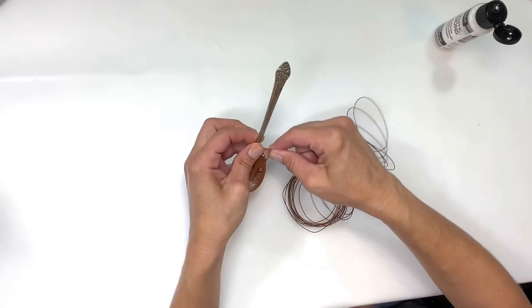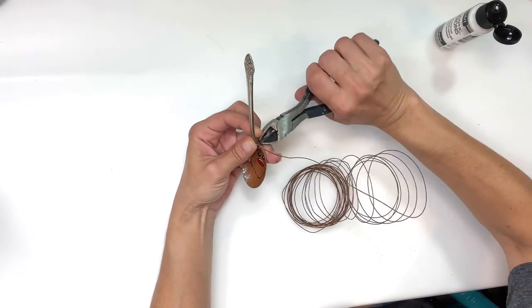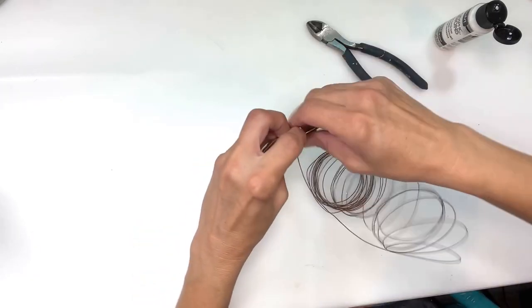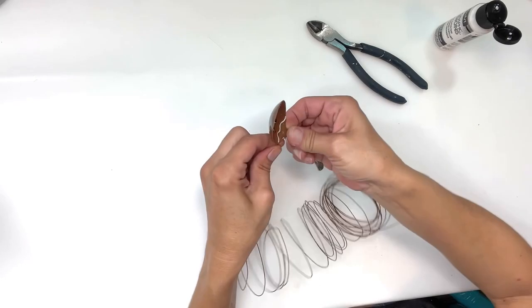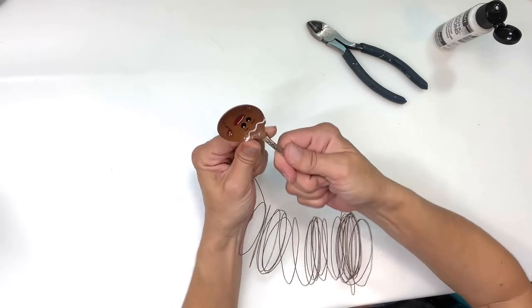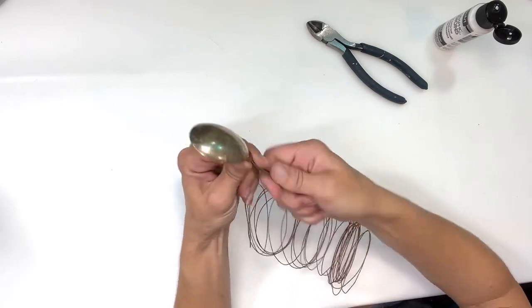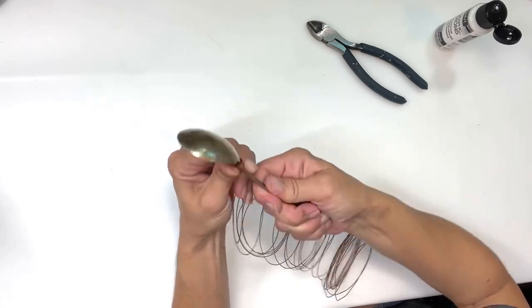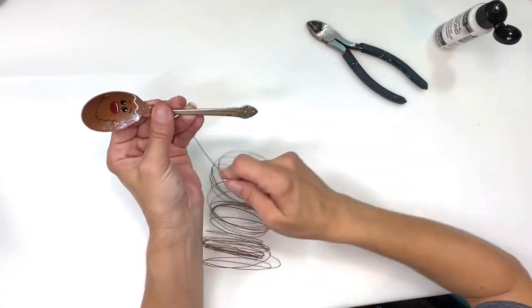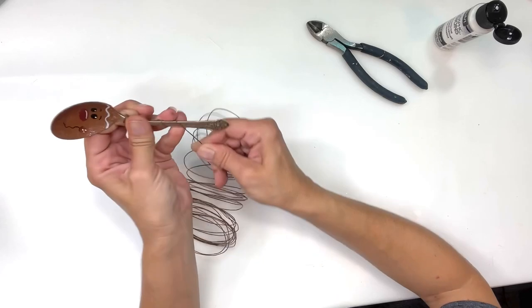Next I'm going to take some wire and wrap it at the very base of the spoon handle. I'm just going to wrap it around a bunch of times in that one spot. Just kind of keep going around, and this is just some rusty wire. Once I have it wrapped around as many times as I want, I'm going to kind of go up the handle with it.